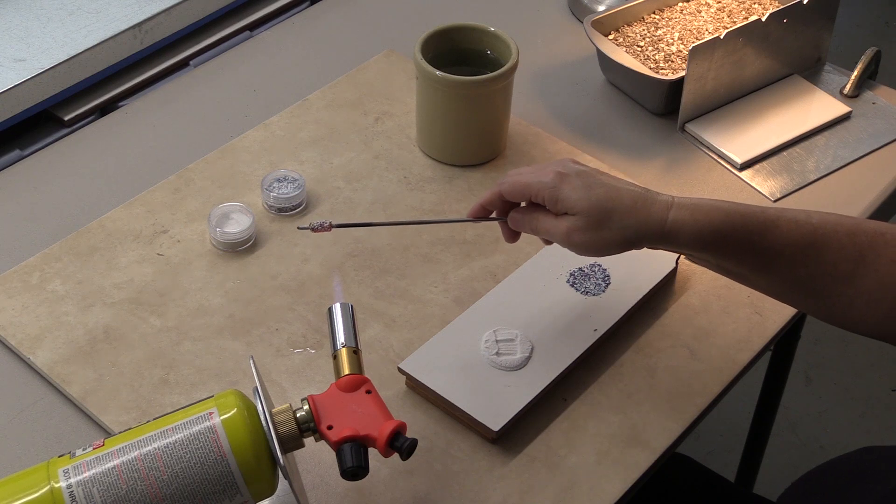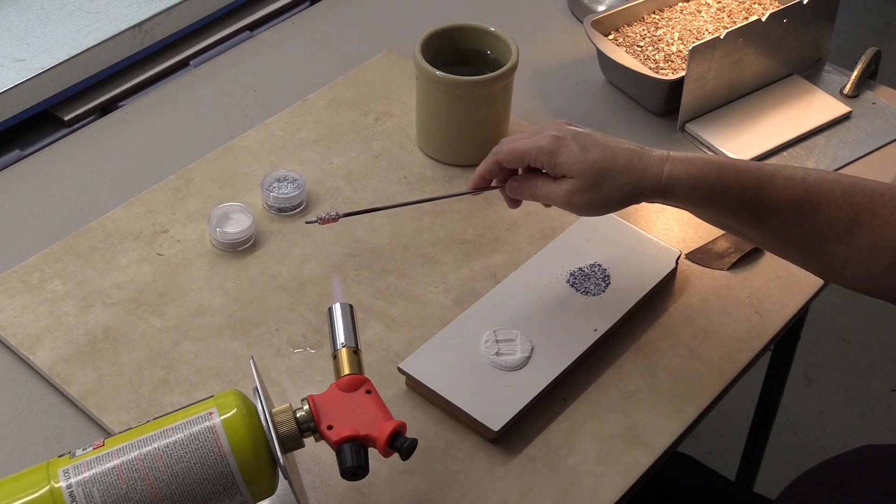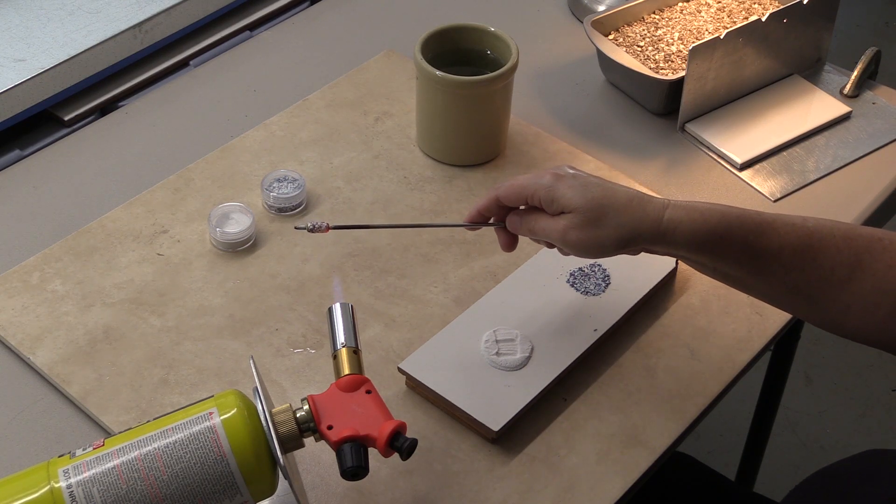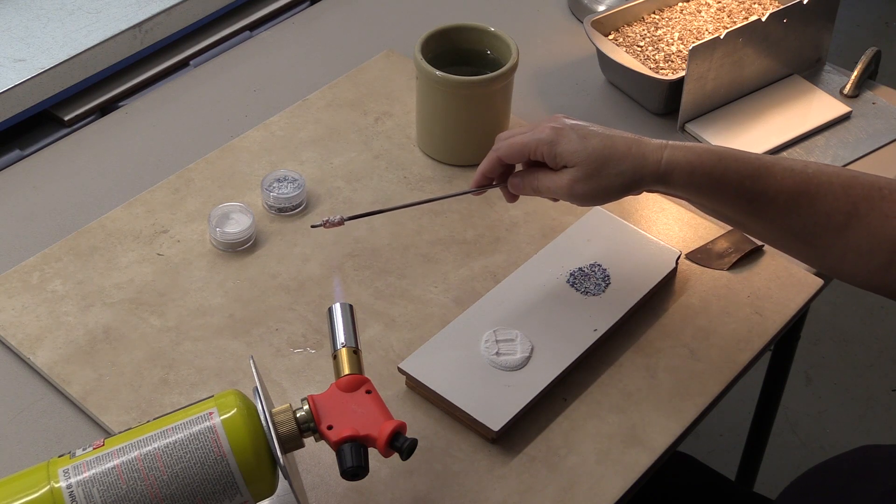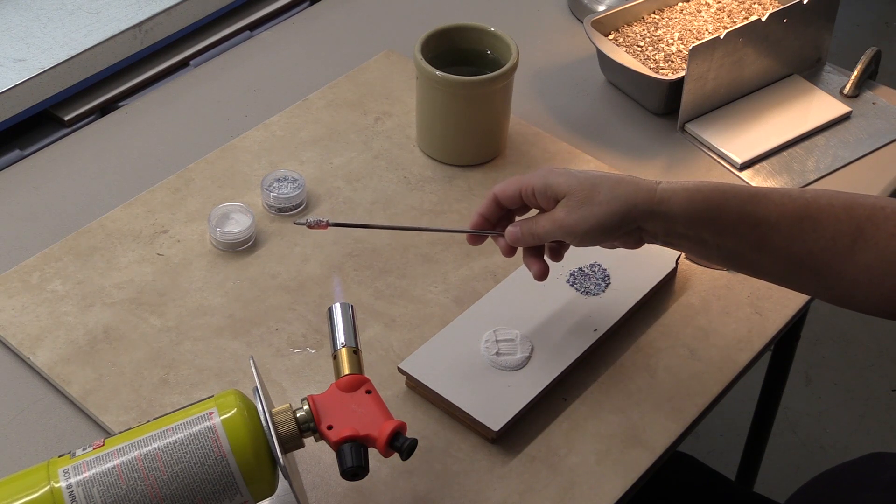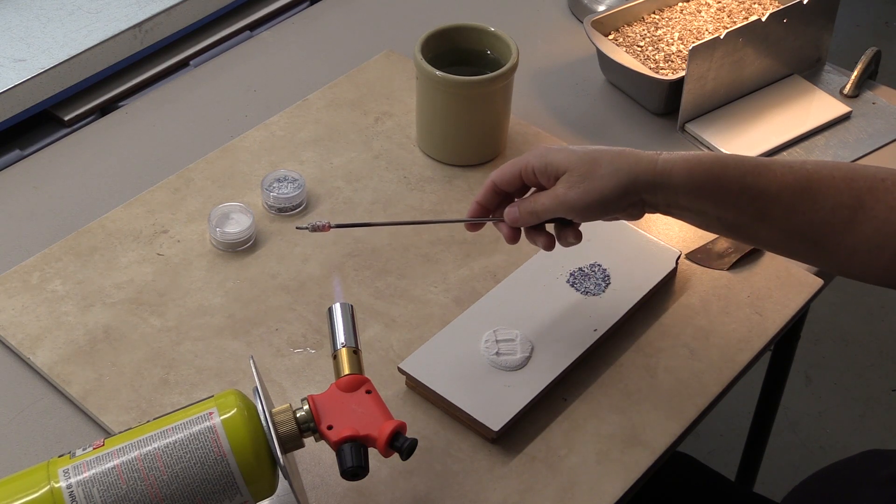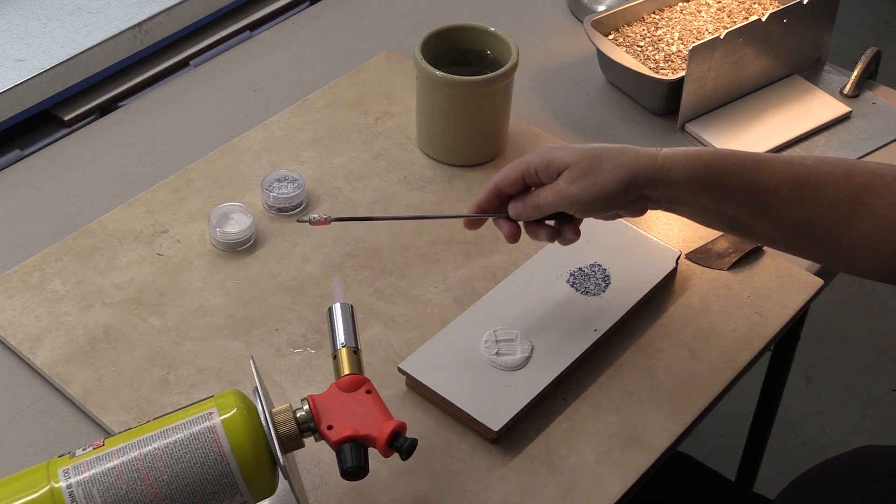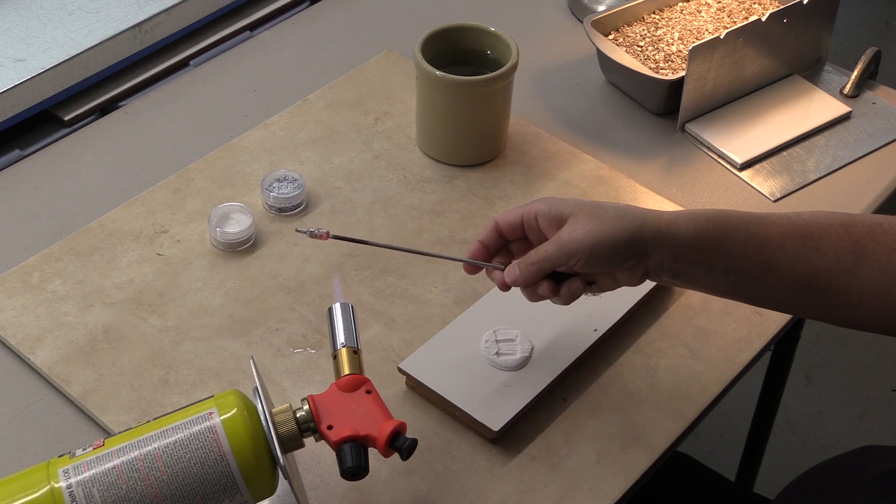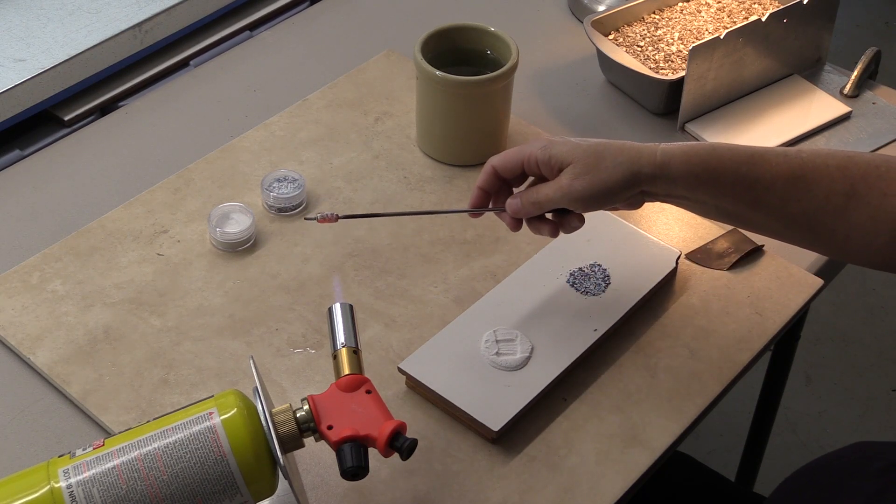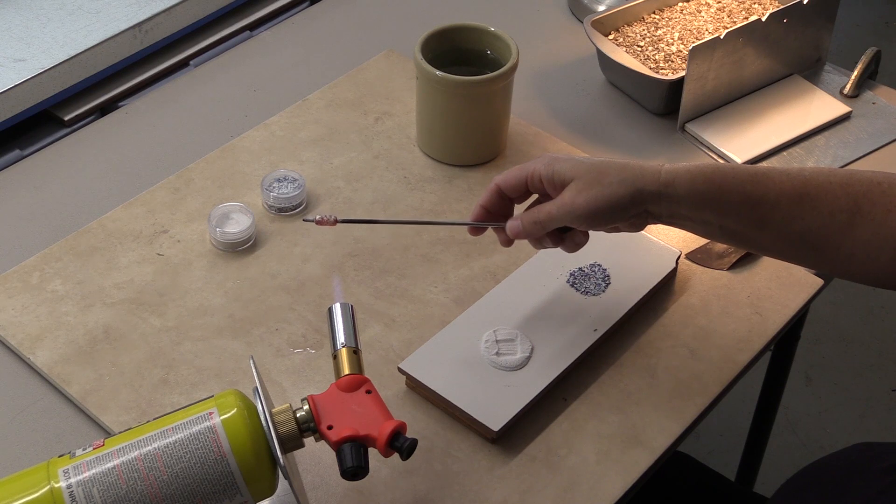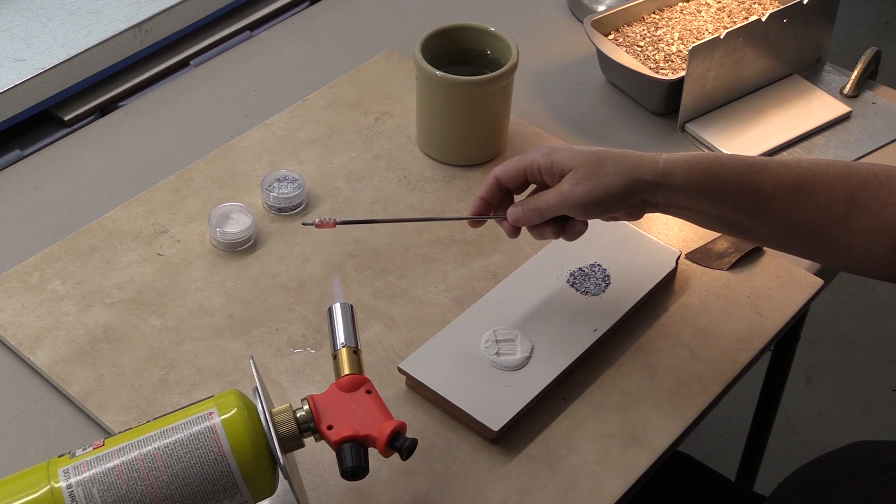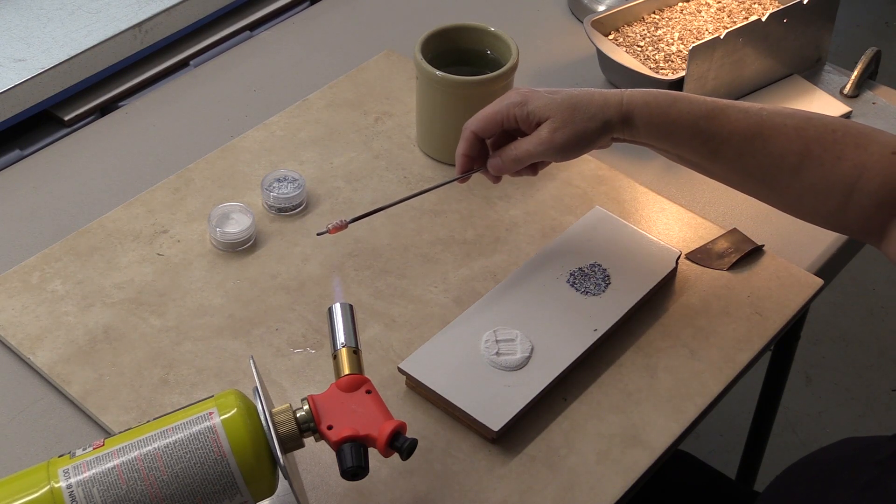The enamel mix comes in a small size, which I'm working with today, and also comes in a medium and a large. They can also be used together. At this point you can see it's starting to get nice and shiny like a lollipop. That's what you want, that's your goal.